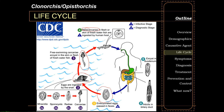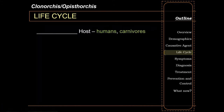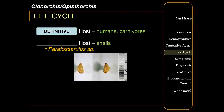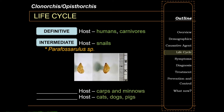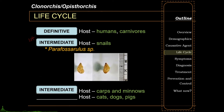Humans and carnivores are considered the definitive host. For humans, this is accidental. Snails are considered the first intermediate host. Carps and minnows are considered the second intermediate host.